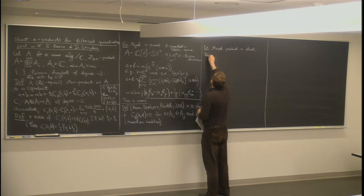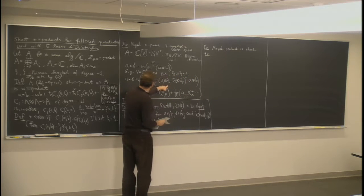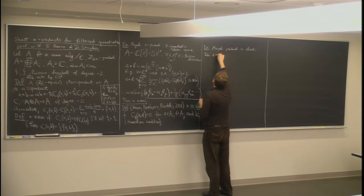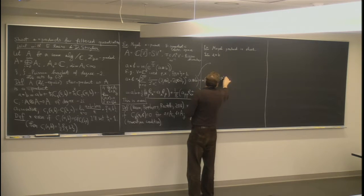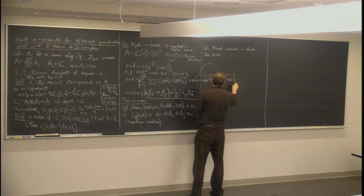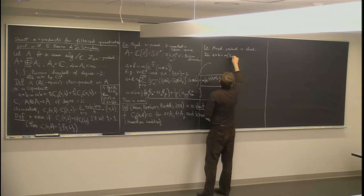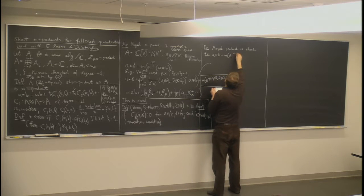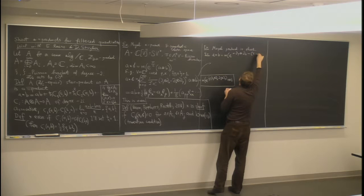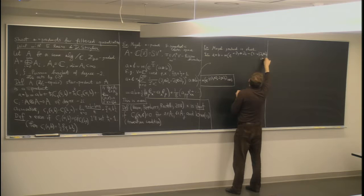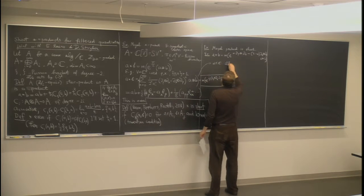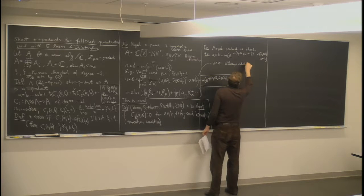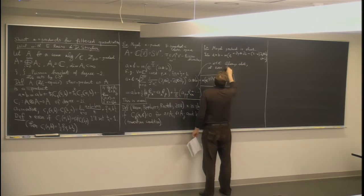We can modify the Moyal example slightly: write a⋆b as multiplication of the exponential of α·∂_p·∂_x minus (1−α)·∂_x·∂_p. This is always associative and always short, but it is not even unless α equals one half.